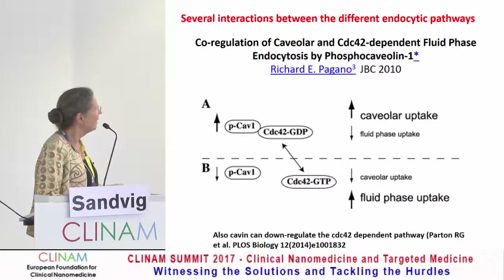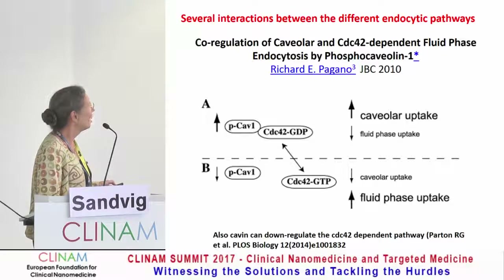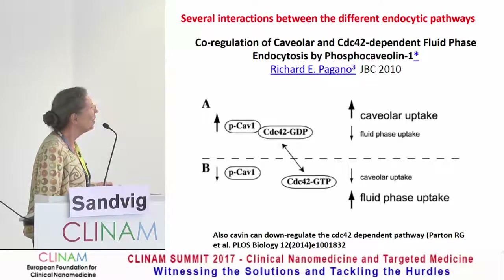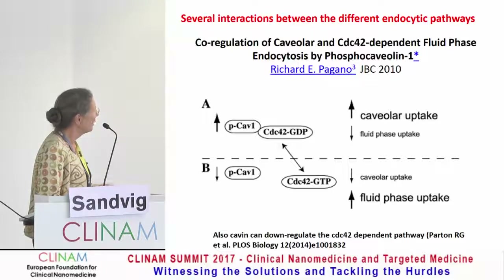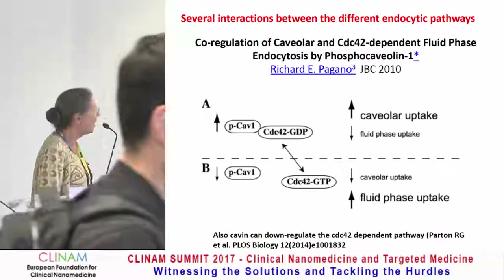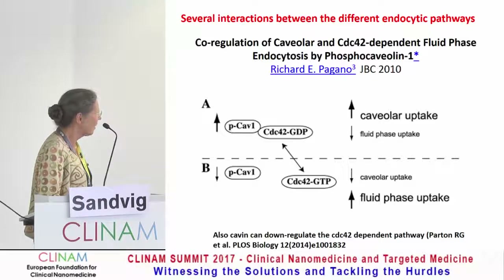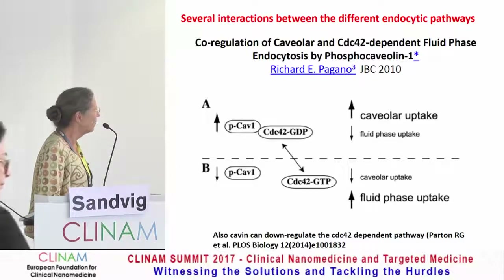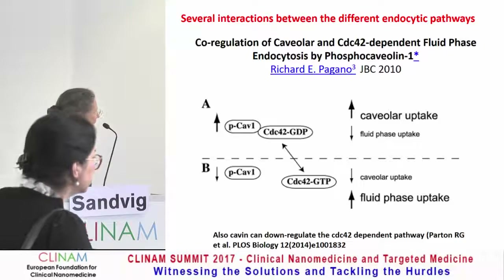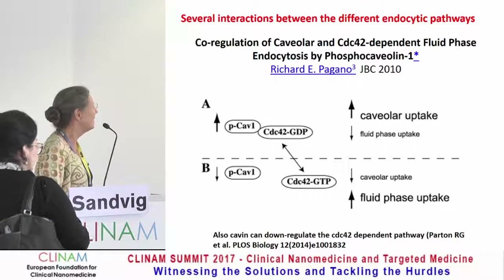It's a challenge to study which endocytic mechanism is involved in uptake, since there are several interactions between the different endocytic pathways. For instance, there is a co-regulation of caveoli and CDC42-dependent fluid phase uptake by phosphocavioline. If phosphocavioline increases, that can increase caveoli uptake but at the same time decrease other types of fluid phase uptake. If phosphocavioline goes down after knockdown of caveoli, one may get more CDC42-dependent uptake. More recently, it was reported that another caveoli-associated protein, caveins, can also affect the CDC42-dependent pathway.